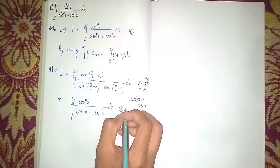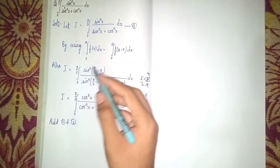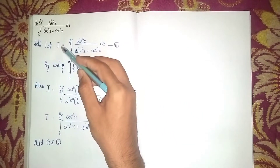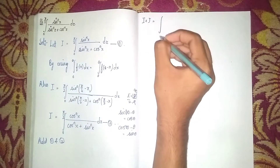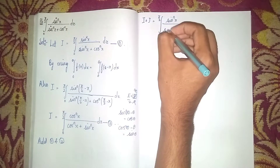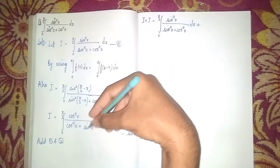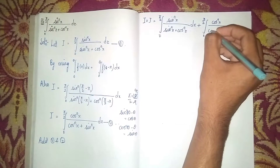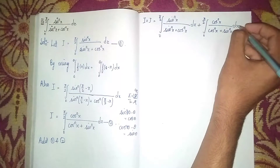Now add equation 1 and equation 2. So I + I = ∫₀^(π/2) sin^n(x) / (sin^n(x) + cos^n(x)) dx + ∫₀^(π/2) cos^n(x) / (cos^n(x) + sin^n(x)) dx.